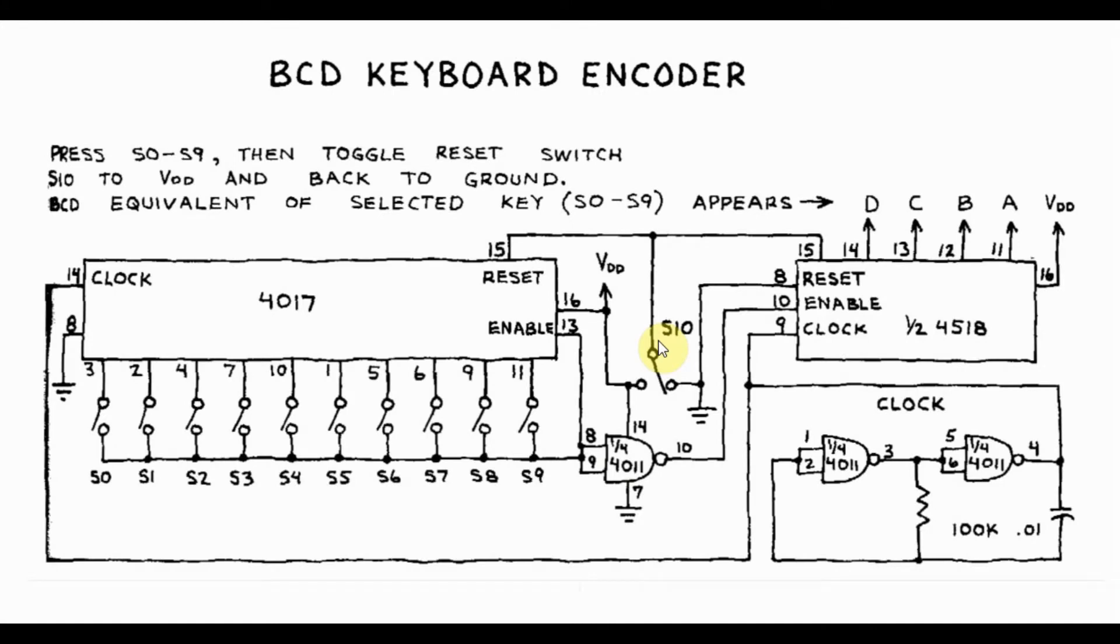The circuit diagram of the keyboard encoder is shown here. It's made of three parts: the clock circuit, the decade counter 4017, and the 4-bit counter 4518.